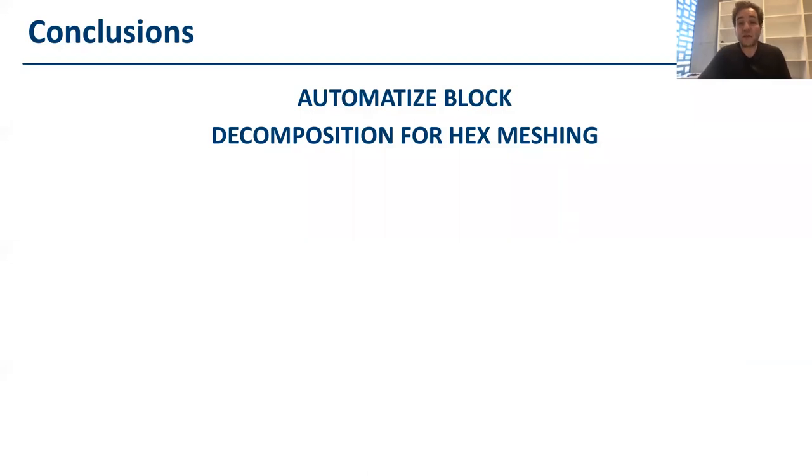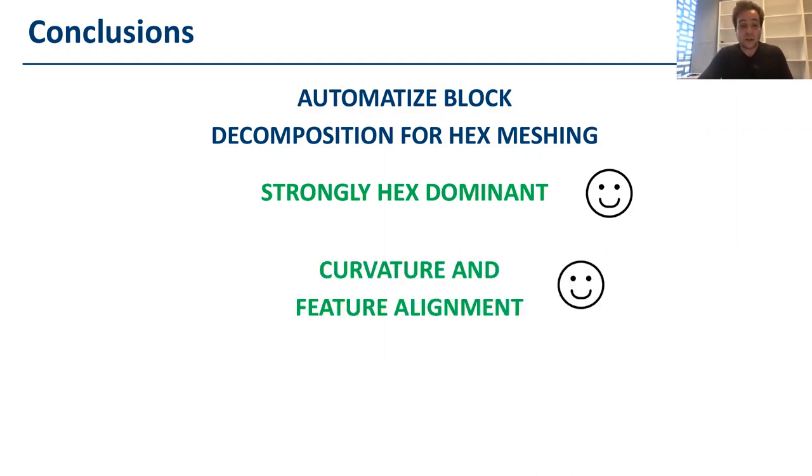So, in the end, we presented a novel method for hex-meshing that produces strongly hex-dominant meshes, which means that we insert as few non-hex elements as possible, and for most cases, we actually obtain hex meshes. Our method both preserves the curvature and the features, so it means that elements are aligned to the curvature direction on the surface, and also the final meshing includes the features, because those are included implicitly in the initial decomposition of the mesh.